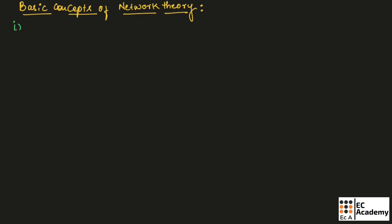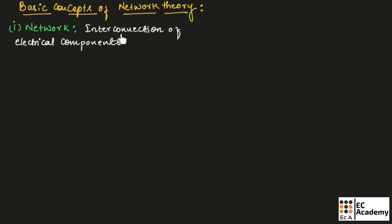First, let us understand what is a network. A network is interconnection of electrical components. For example, if we take a resistor, inductor, and capacitor, these three are electrical components. If we interconnect these components, we call the resulting circuit as a network. So, a network is interconnection of electrical components.